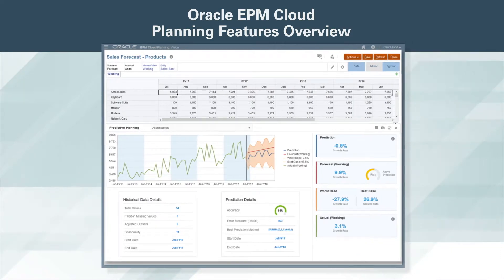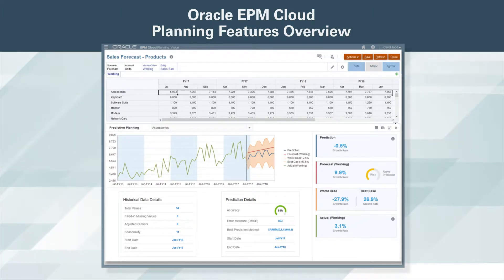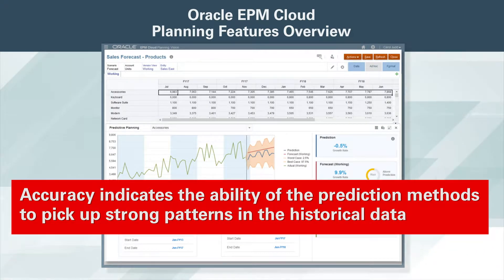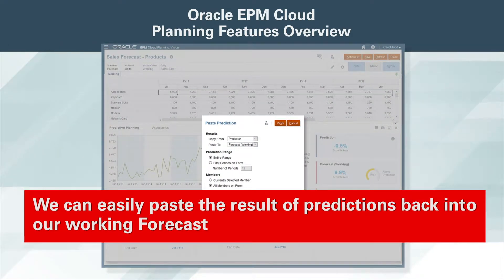These prediction results can be used to compare predictive planning predictions with planner forecasts. The default view indicates plots of historical and predicted data. Accuracy indicates the ability of the prediction methods to pick up strong patterns in the historical data. We can easily paste the result of predictions back into our working forecast.